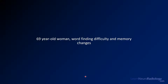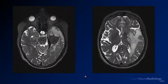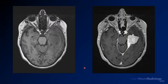Moving on to a 69-year-old woman with word-finding difficulty and memory changes. T2 images through the tentorium show a little thickening of the left tentorium and a very low T2 mass extending into the middle cranial fossa from the medial aspect, with a lot of surrounding edema in the left temporal lobe extending into the insular white matter and basal ganglia. On pre- and post-contrast imaging, there's a relatively isointense mass — similar to gray matter — that enhances very avidly and solidly on post-contrast, with a few pedunculated areas and thickened tentorium that is also enhancing.